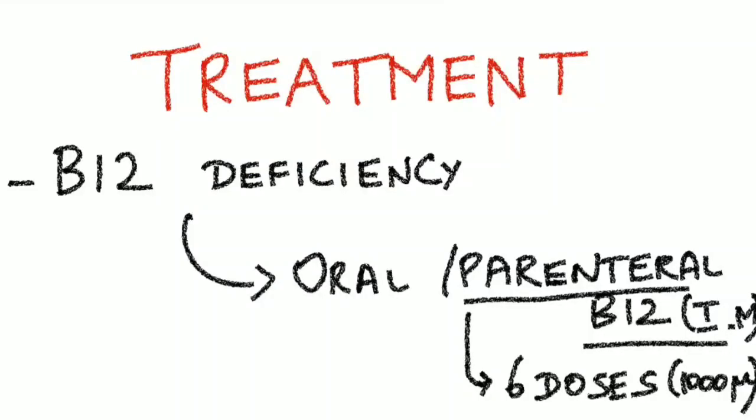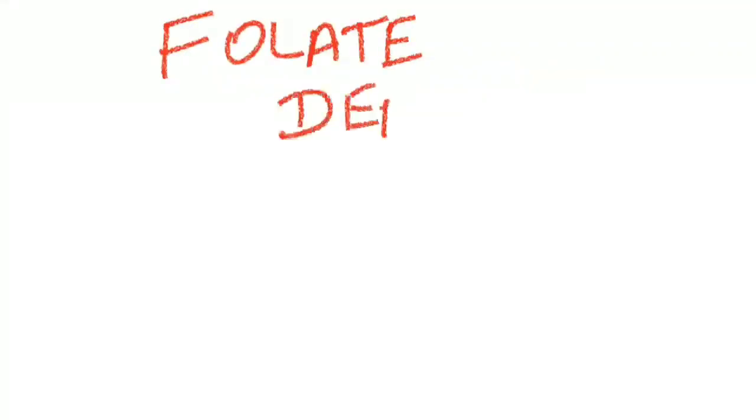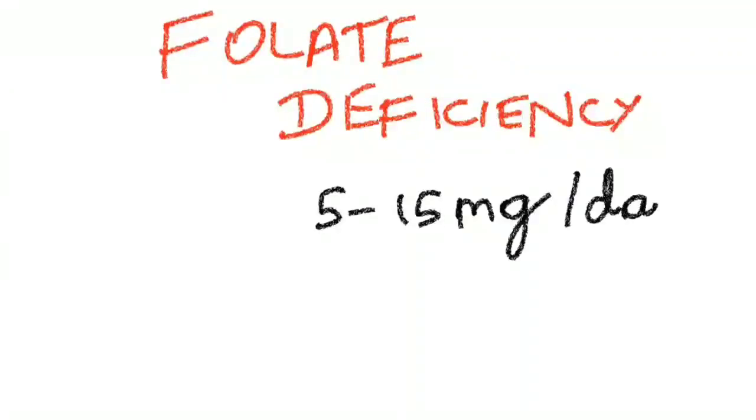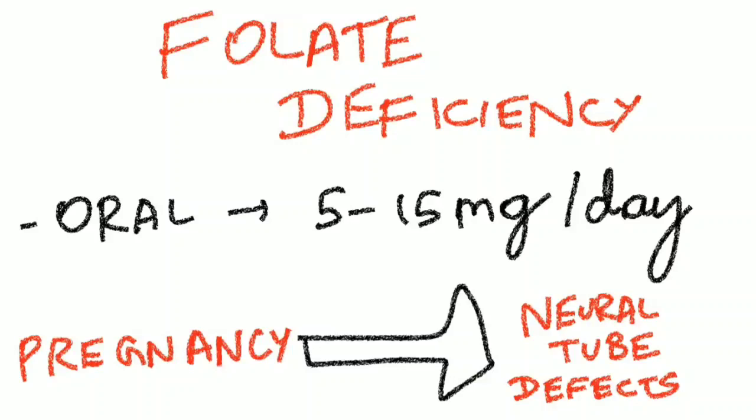So the treatment of vitamin B12 deficiency is by oral or parenteral B12 therapy. The parenteral therapy usually involves six doses of each of 1000 microgram intramuscular vitamin B12 injections. Folate deficiency is treated by oral folate. The dose is usually 5 to 15 mg per day. And in pregnancy, folate is very, very important, especially in the first trimester, to prevent the neural tube defects like anencephaly and spina bifida.